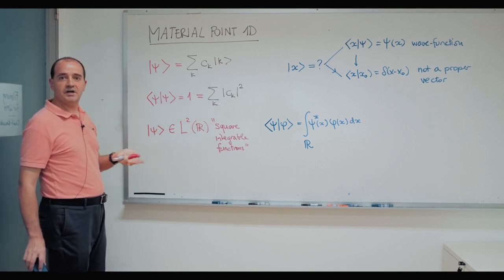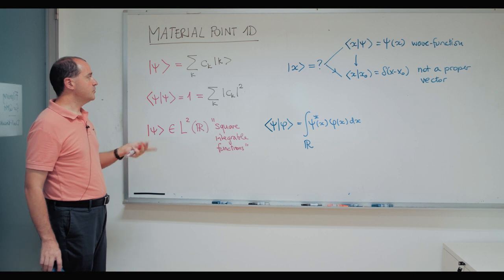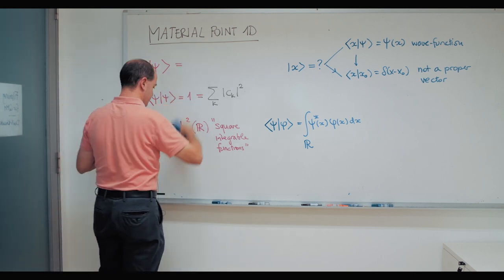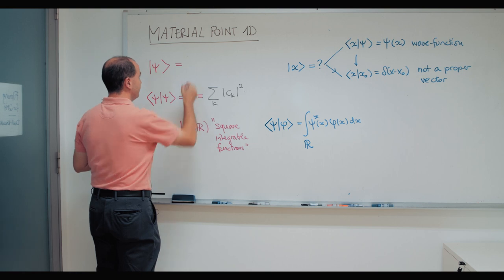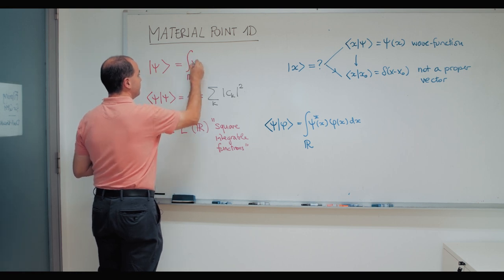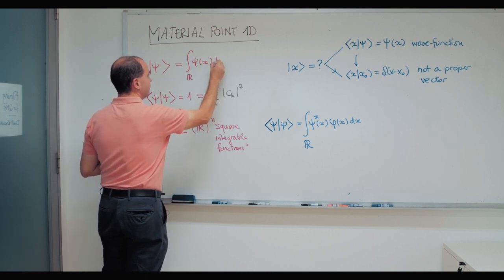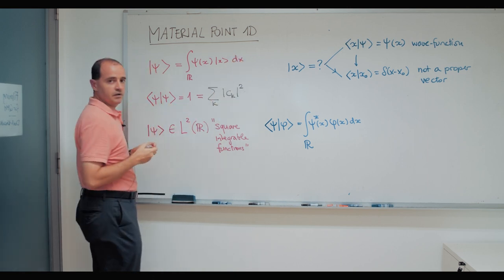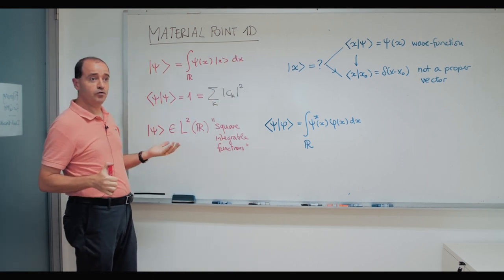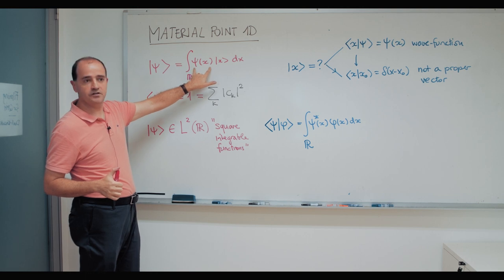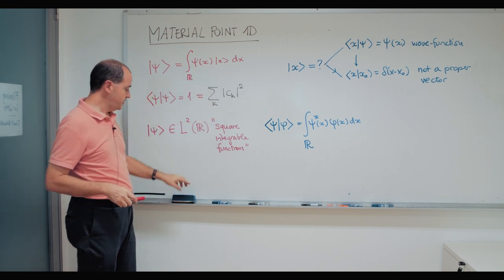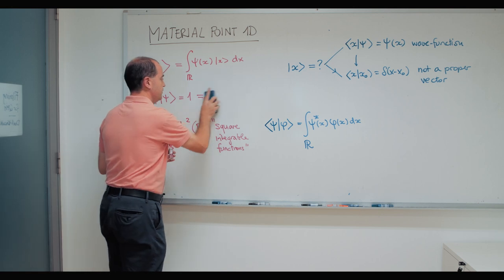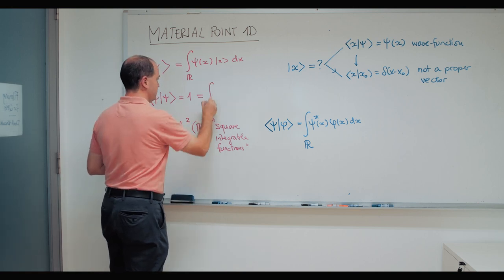Here we're going to have the analog of that for continuous variables. So instead of a sum, we're going to have an integral. This psi of x now plays the role of the ck before, and the normalization will look like this.